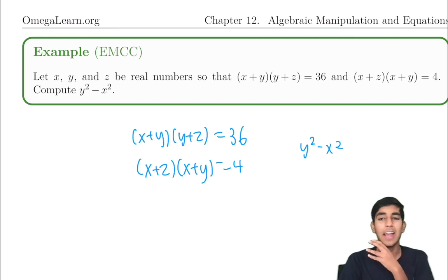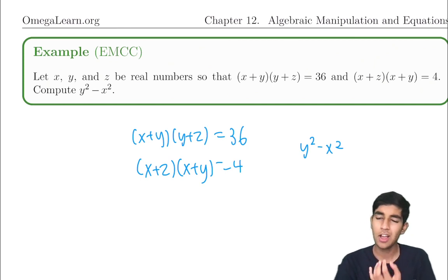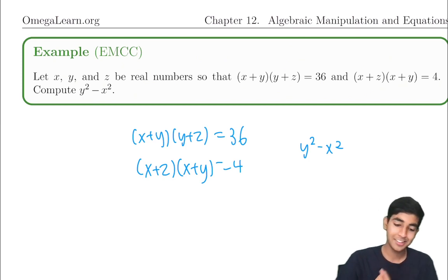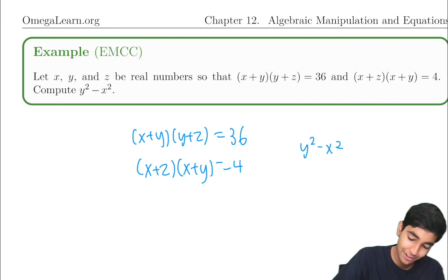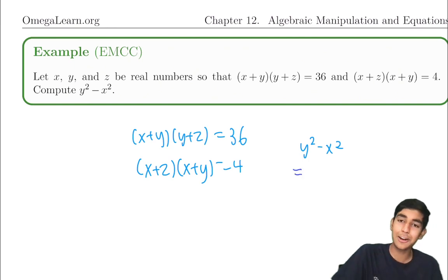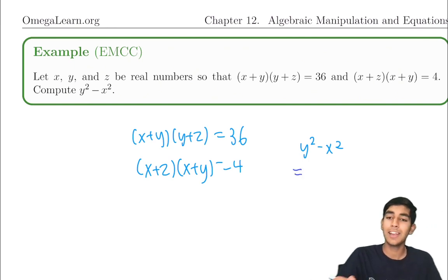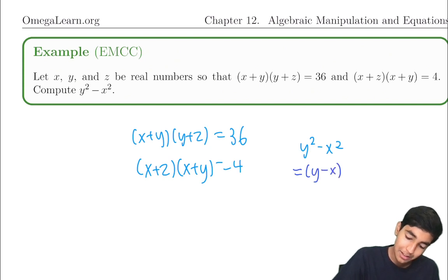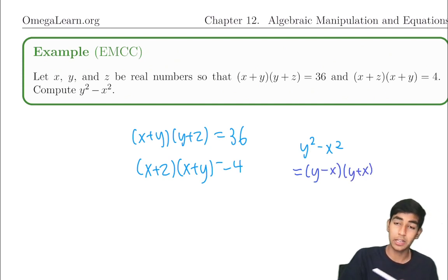What is y squared minus x squared? Does it look like anything familiar — any factorization or identity? Difference of squares: a squared minus b squared equals (a minus b)(a plus b). Same thing here: y squared minus x squared equals (y minus x)(y plus x). This is an identity worth knowing.